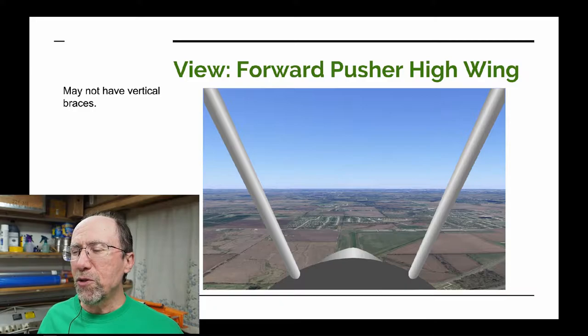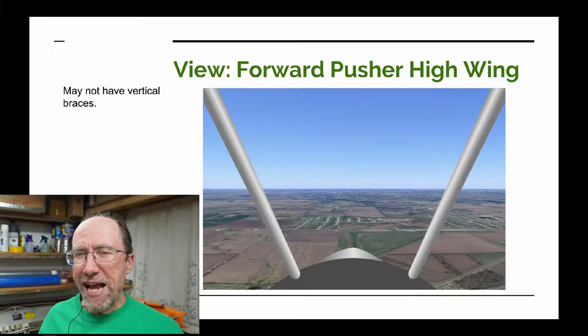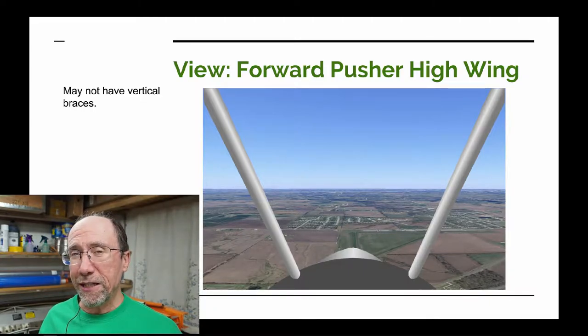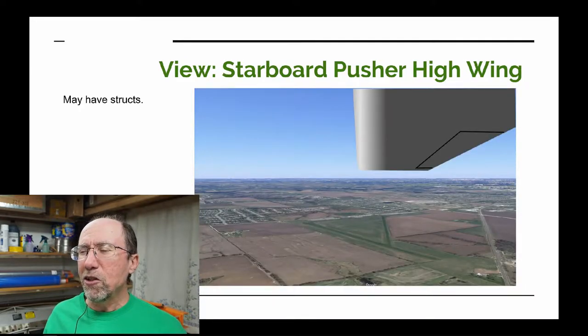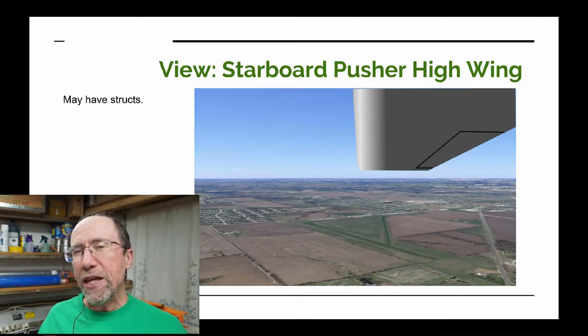Now we have the forward view looking out of a pusher configuration — you can see a much better view over the nose. I added a couple of posts and braces to this view mainly because I intend to add those to the design for the UWS-1, to help protect the pilot in case we have to land in trees. On the side view of these pusher configurations, the pilot is now farther forward, so the view blocked by the wing is farther back. You have a better view looking up and forward.